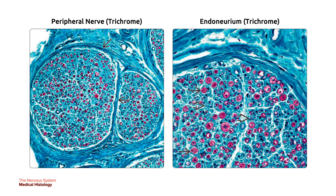Peripheral nerve axons on the left are red on trichrome stain, and the connective tissue is blue-green. The perineurium in the blue single arrow is composed of multiple concentric layers of flattened cells and collagen surrounding each bundle or fascicle. On the right, individual nerve fibers stain red in the single black arrow, and the endoneurium in bold black arrow is blue-green, composed of satellite cells and fine connective tissue extending around and between each individual nerve fiber.